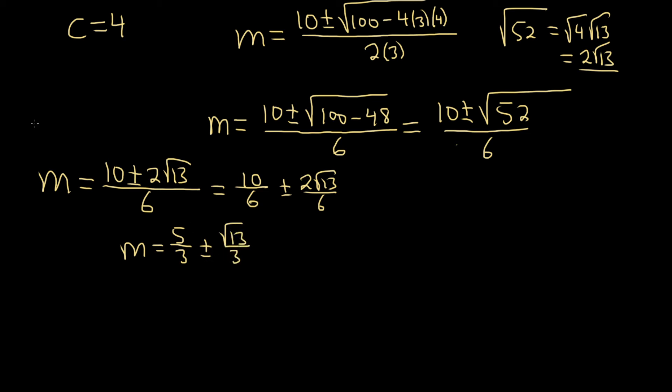So now we'll use the formula. The formula tells us that the answer is c1, e to the m1x, plus c sub 2, e to the m2x.